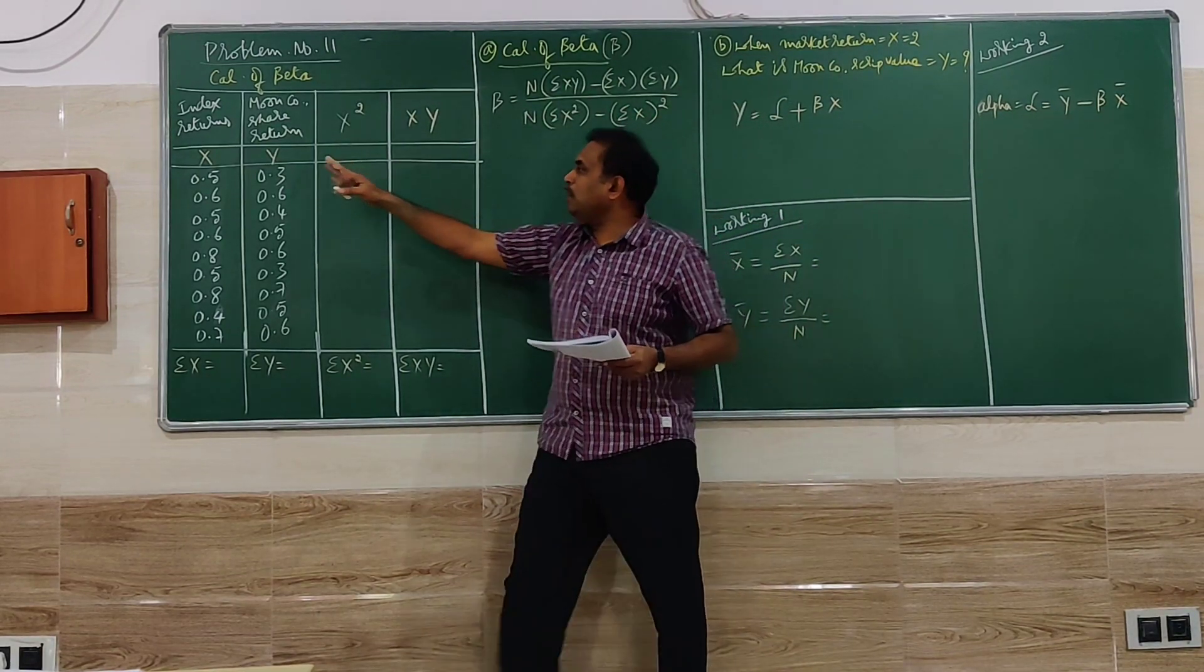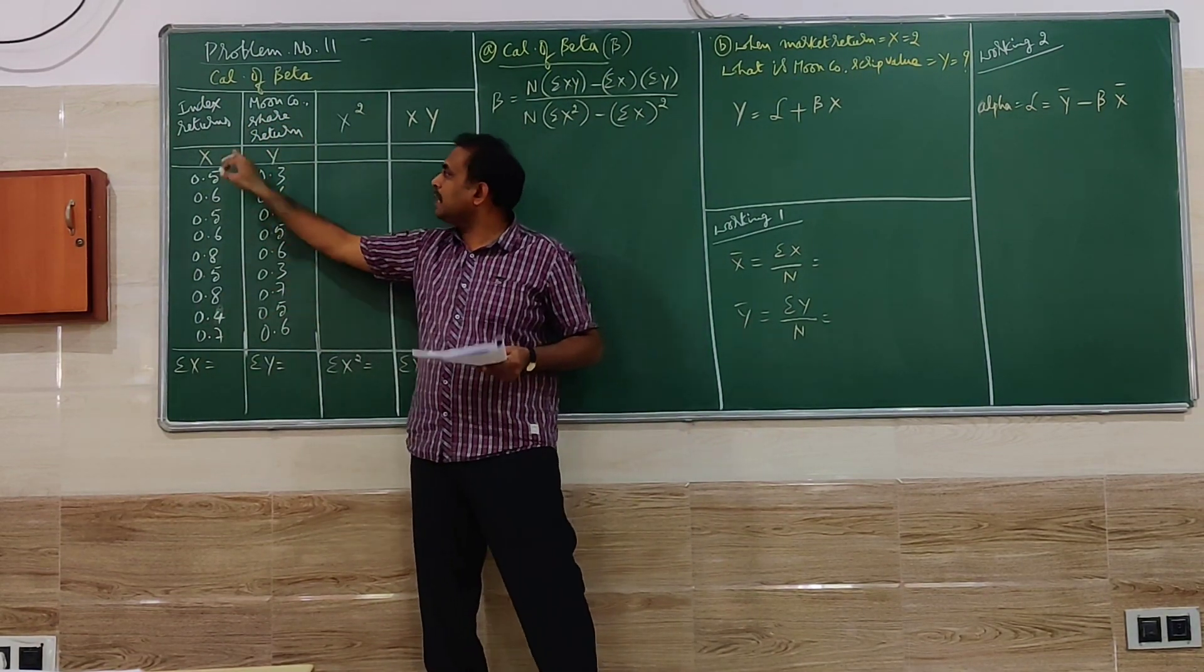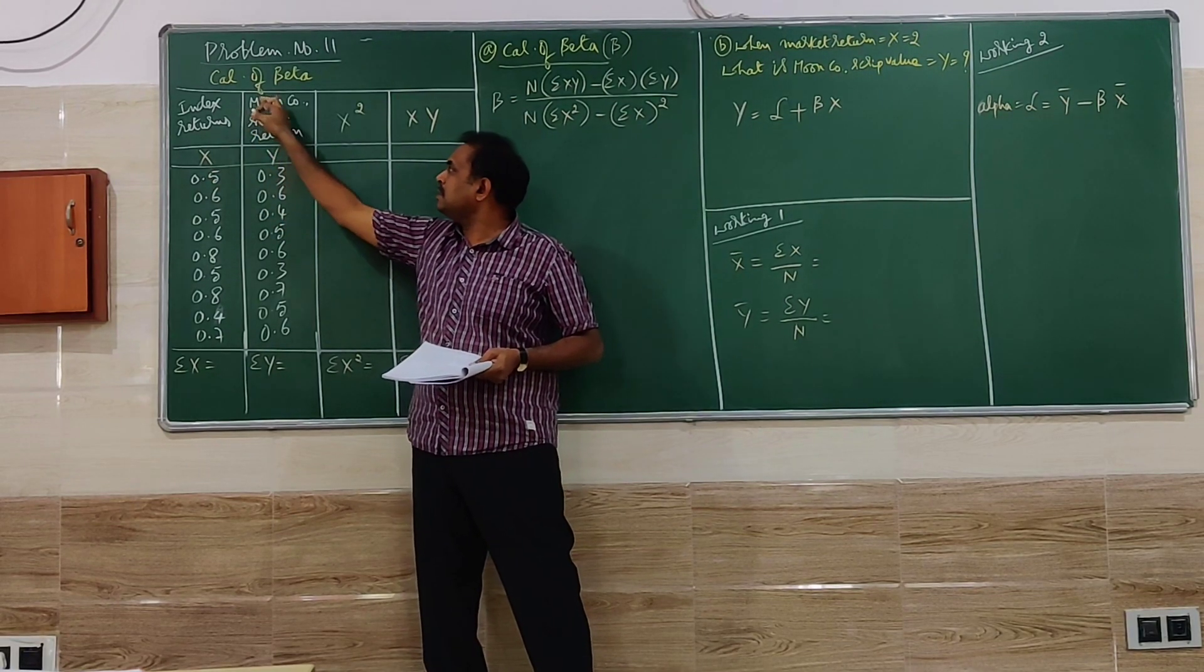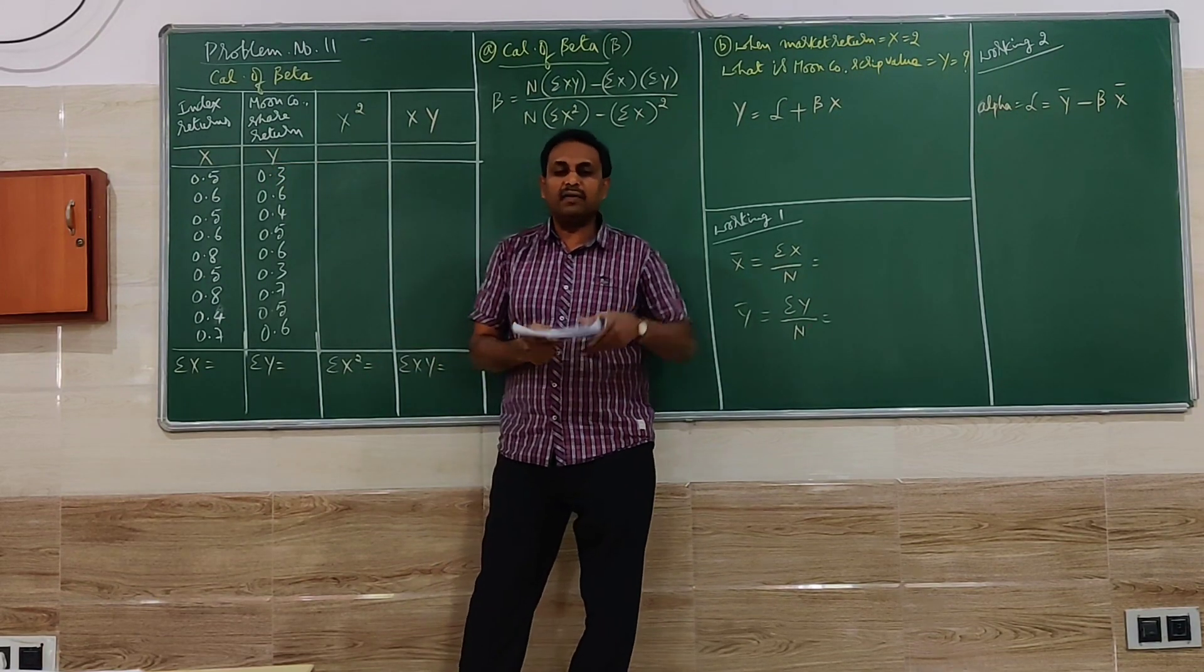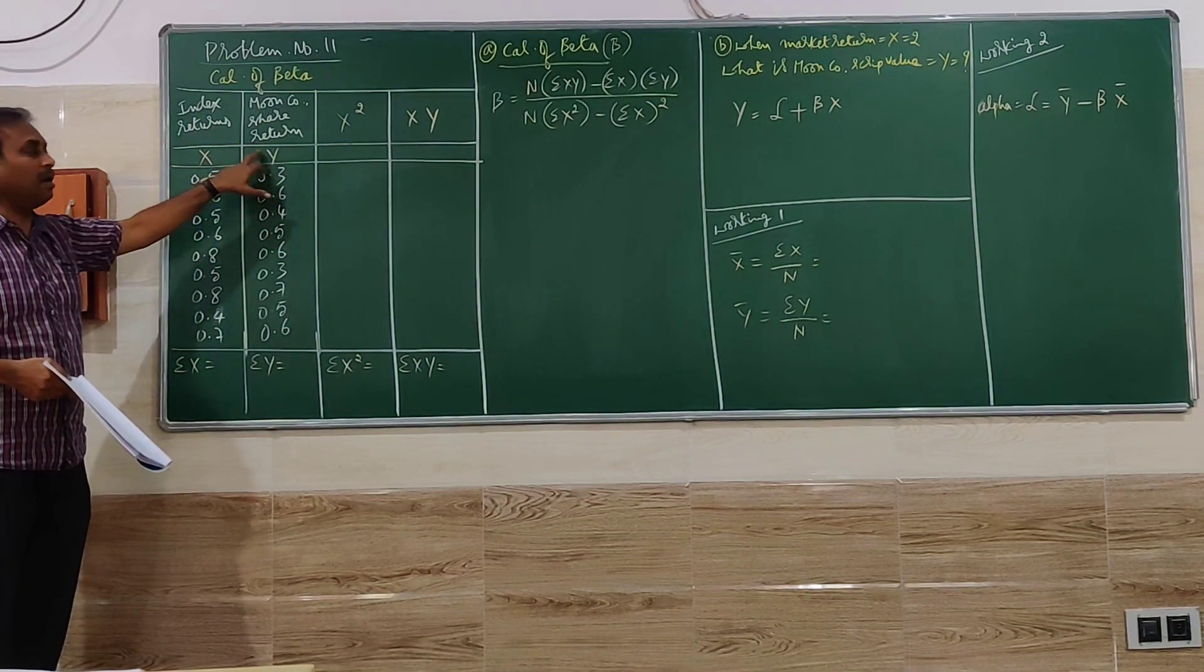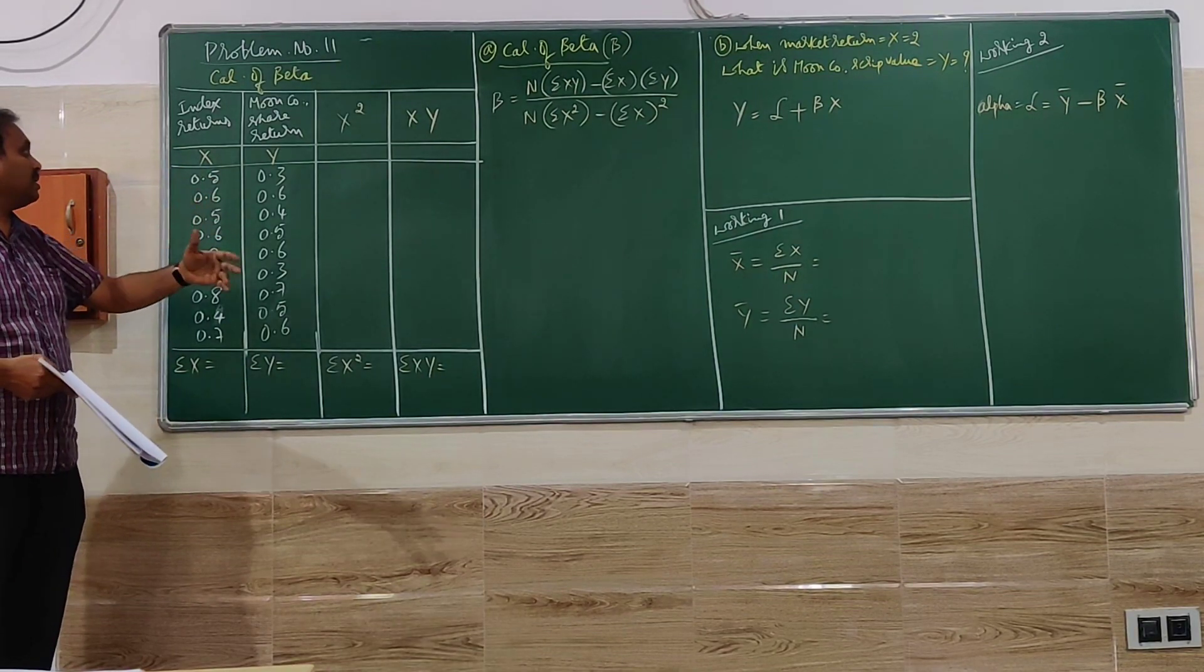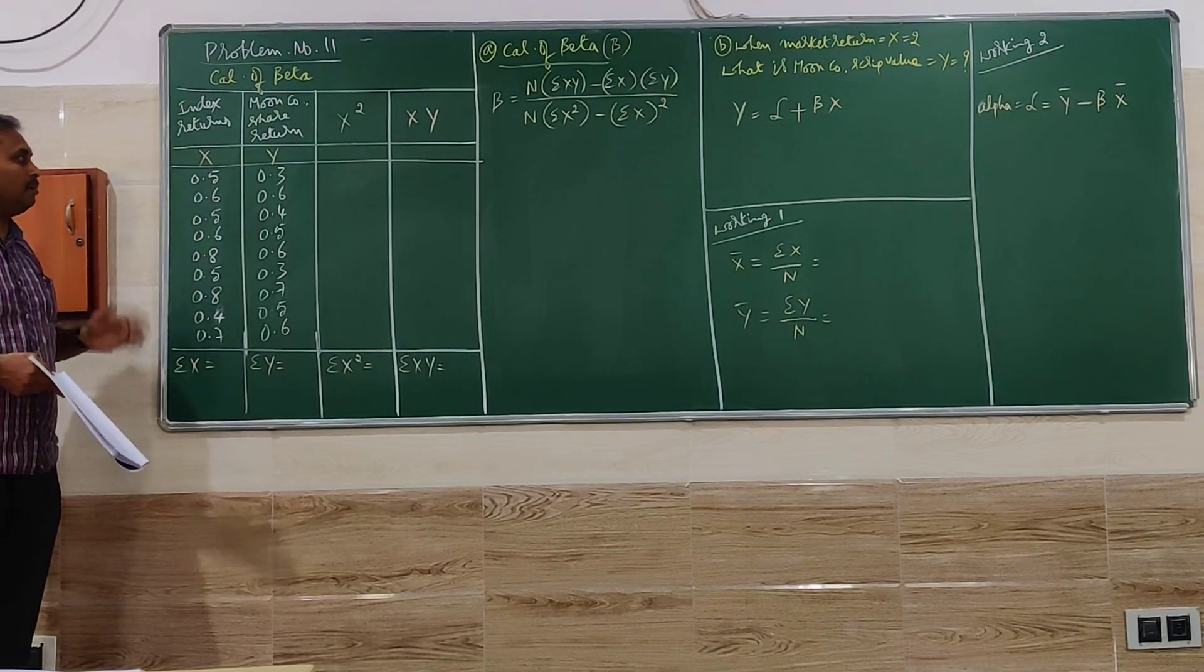Values are given for index returns and moon company returns. Index is the market, we take it as X, and moon company share we take it as Y. I have given the note in earlier videos also, how to identify X and Y. Y is always the company one and X is always the market return, it may be BSE, NSE or whatever indices. These are the values given in the problem.